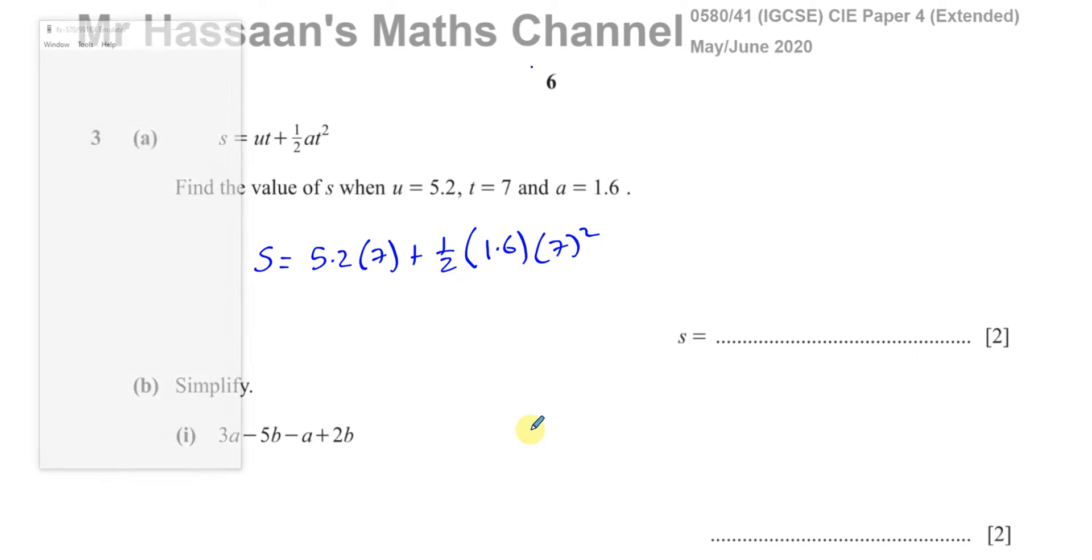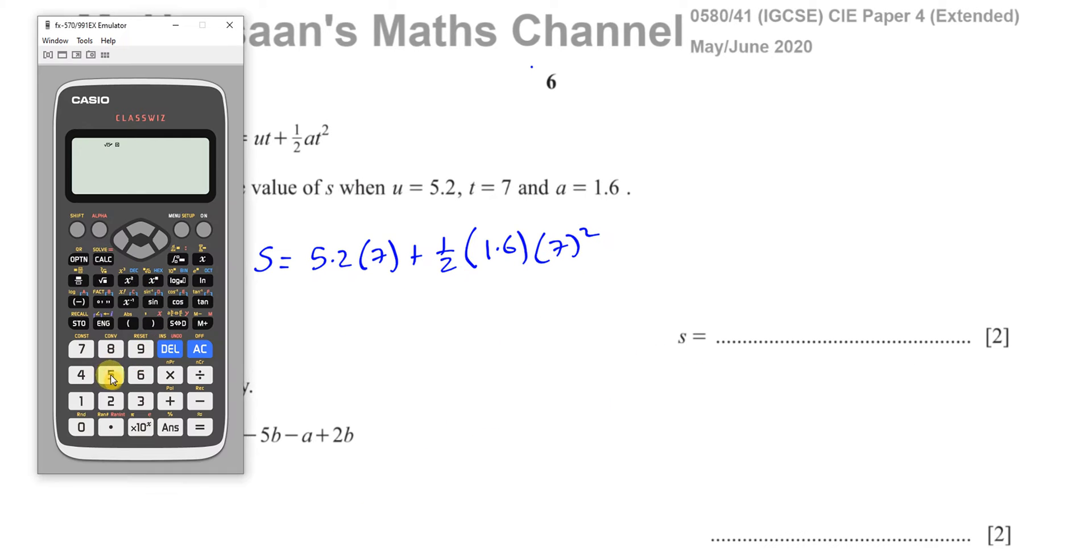So you can just stick this straight into your calculator and get the answer. Let's see, 5.2 times 7 plus a half times 1.6 times 1.7 squared... whoops, times 1.6. You have to be very careful. I put 5.2 but I didn't press the point properly. That's better.